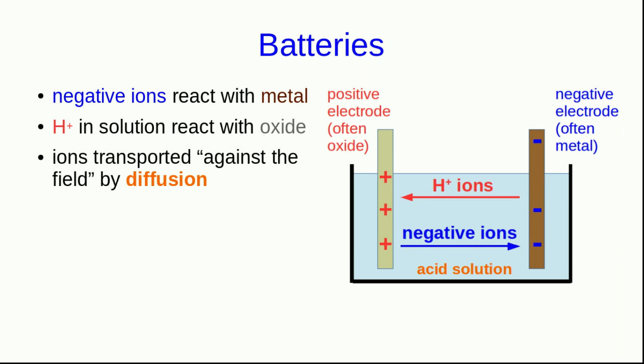And so diffusion happens. Hydrogen ions are transported by diffusion to where their concentration is lower, and so are the negative ions. This means that these ions are being transported against the electric field, because the electrical forces would be pushing both ions in the opposite direction.